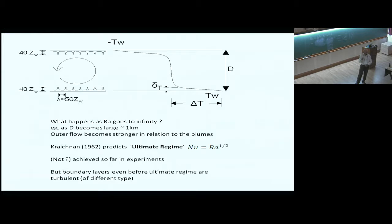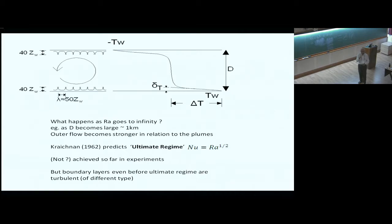The main point is one should distinguish between viscous flow and laminar flow. Viscous flow means the Reynolds number is small, which is true near the wall — but it doesn't mean that it is laminar. For example, in a turbulent boundary layer, the Reynolds number based on the sublayer thickness is small, yet you get huge fluctuations in turbulent wall shear stress. What probably happens as you approach the ultimate regime is a transition from a mixed convection type of regime to a forced convection type.